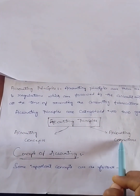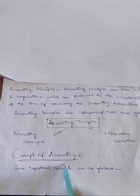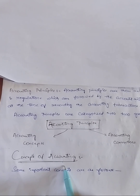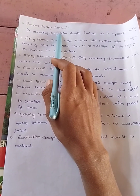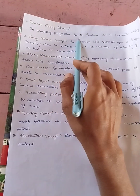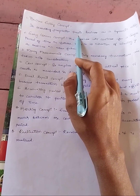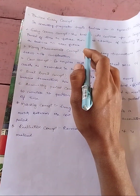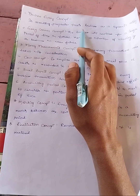Today I'm going to discuss concepts of accounting. The first concept is the Business Entity Concept. According to this concept, the owner is separate and the business is separate. Transactions related to the business should not be mixed up with personal life.